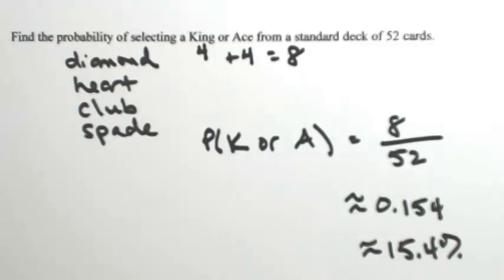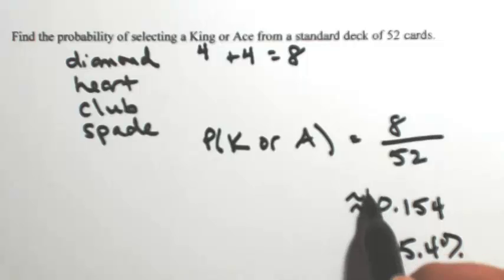Out of a standard deck of 52 cards, if you pick one, you have a 15% chance it's going to be a king or an ace.